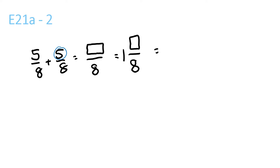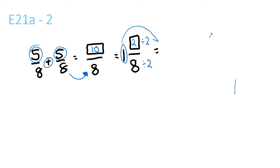5 plus 5 is equal to 10. The bottom one stays the same. 8 goes into 10 once, with a remainder of 2 over 8. Now, 2 divided by 2 and 8 divided by 2 — that will be 1 and 1 over 4.